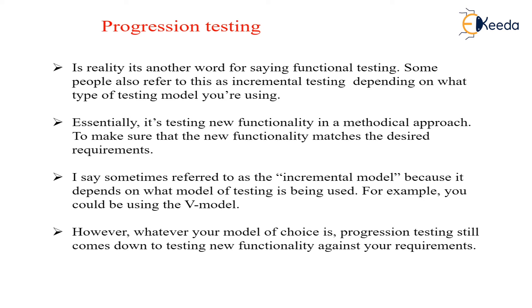Right now, we are studying what is progression and what is progression versus regression. Normally in regression testing, small changes are made, then it is rerun and tested so that the external output should not be hampered. It is sometimes referred to as an incremental model because it depends on what type of testing is being used. The incremental model is one kind of approach or strategy used while building the course, and testing is also done using the incremental approach.